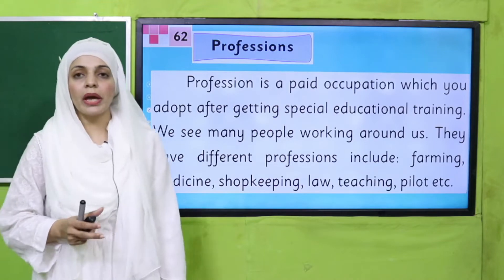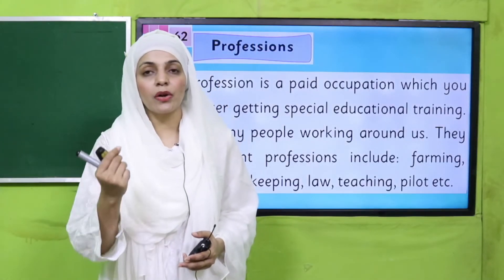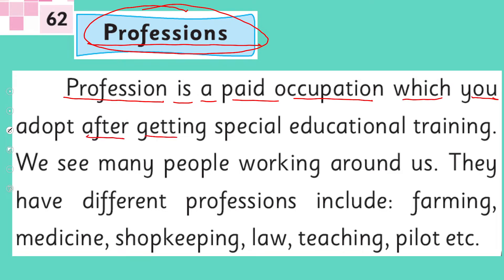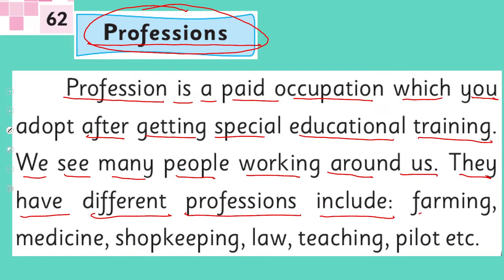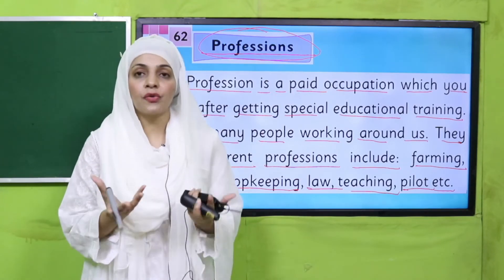Now it's time for reading. Quickly open page number 62 in your GK2 books. Professions — sab se pehle hum yeh jaante hain ki basically profession kya hota hai. Urdu mein isko kehte hain 'pesha.' A profession is a paid occupation which you adopt after getting special educational training. We see many people working around us — they have different professions, including farming, medicine, shopkeeping, law, teaching, pilot, etc.